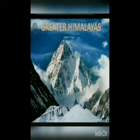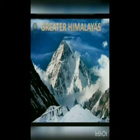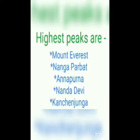First, let us talk about the first parallel range of the Himalayas. The first parallel range is called the Himadri, or the Greater Himalayas. The Himadri is the highest part of the Himalayas; the peaks are permanently covered with snow. The world's highest peaks lie in the Himadri — these are Mount Everest, Nanga Parbat, Annapurna, Nanda Devi, and Kanchenjunga. Mount Everest is the highest mountain peak in the world, and Kanchenjunga is the highest mountain peak in India. Himadri is also very famous for glaciers.